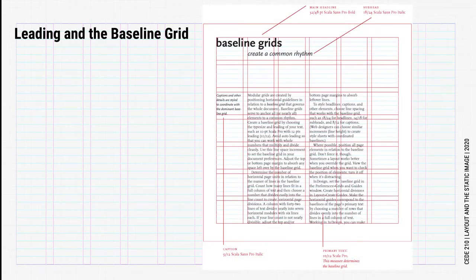Let's briefly discuss leading and baseline grids. Baseline grids can be incorporated into any grid — columnar, hangline, hierarchical, and even modular grids. We should avoid auto-leading and focus on how we can use the leading of our body copy to enhance our designs.